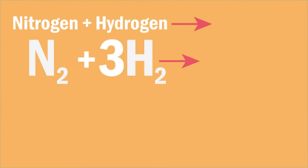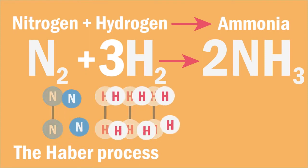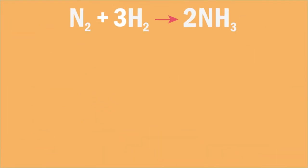Now consider the reaction between nitrogen and hydrogen to form ammonia. This is the Haber process. We can represent what happens in this reaction by the diagram.